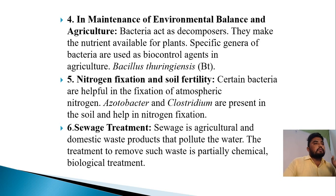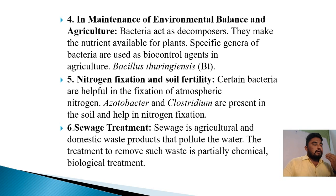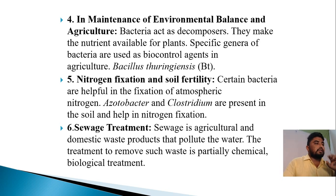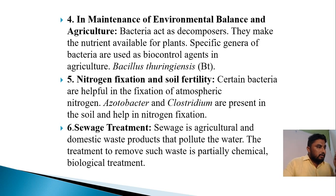In maintenance of environmental balance and agriculture, bacteria act as decomposers and make nutrients available for plants. Specific bacteria are used as biocontrol agents in agriculture — for example, Bacillus thuringiensis (Bt), used in Bt tomato, Bt brinjal, and Bt cotton, used by farmers. Next is nitrogen fixation and soil fertility. Certain bacteria are helpful in the fixation of atmospheric nitrogen — for example, Acetobacter and Clostridium are present in the soil and help in nitrogen fixation. Nitrogen-fixing bacteria such as Rhizobium enter into the roots — for example, in beans, forming small root nodules. These bacteria are associated with nitrogen fixation.